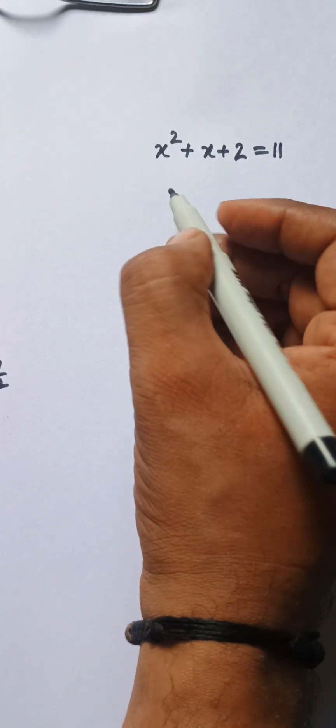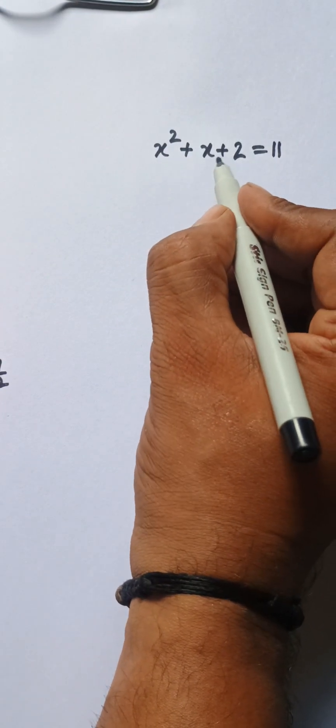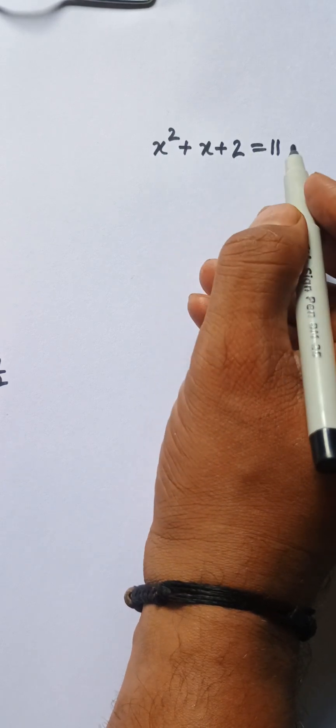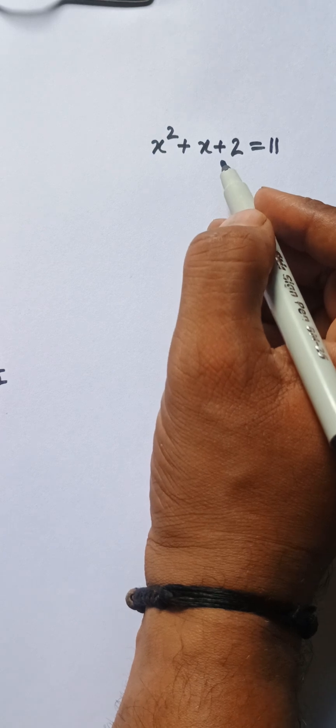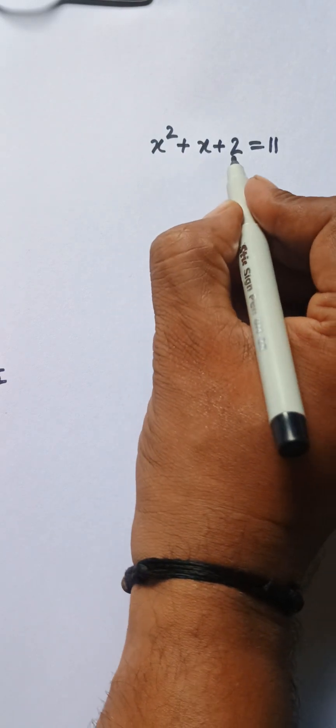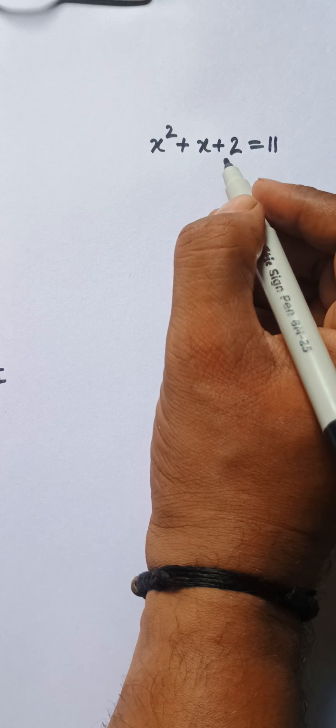This constant is on the left side. I need to put this constant on the right side because we know that all the variables should be on the left side and all the constants should be on the right side.